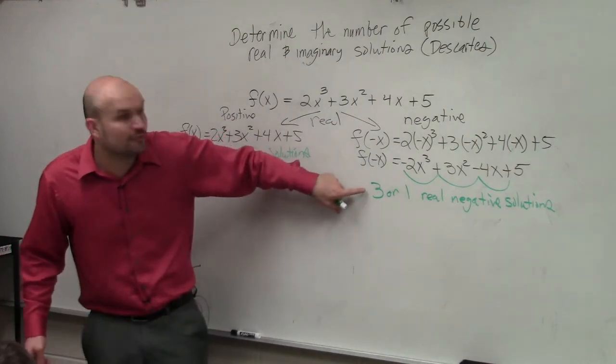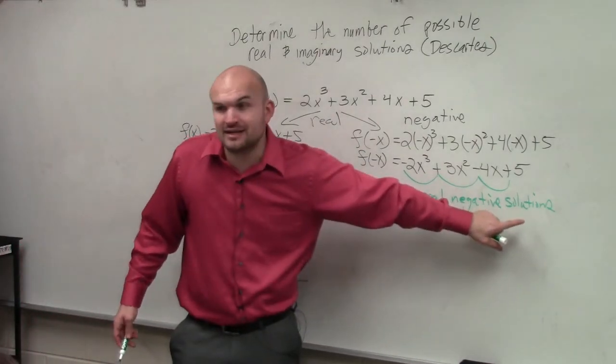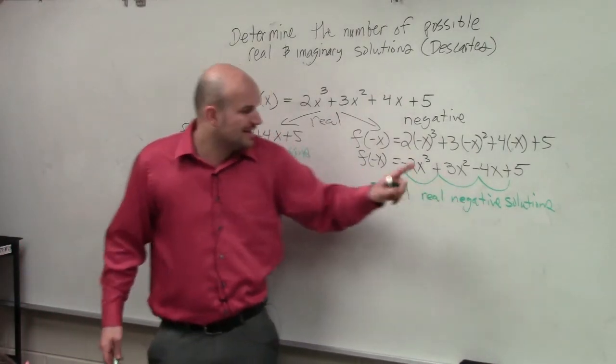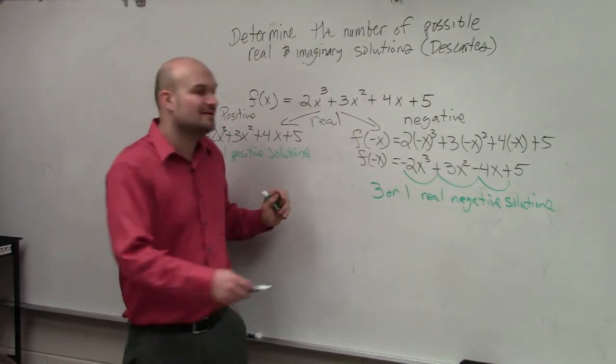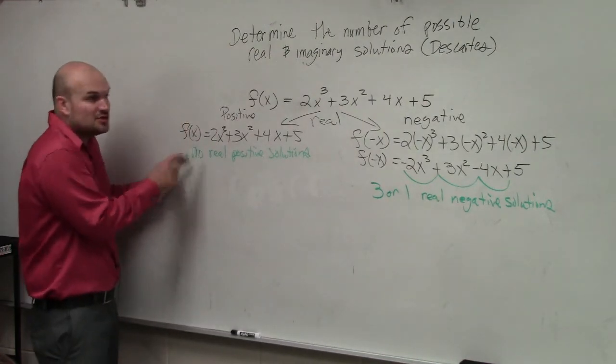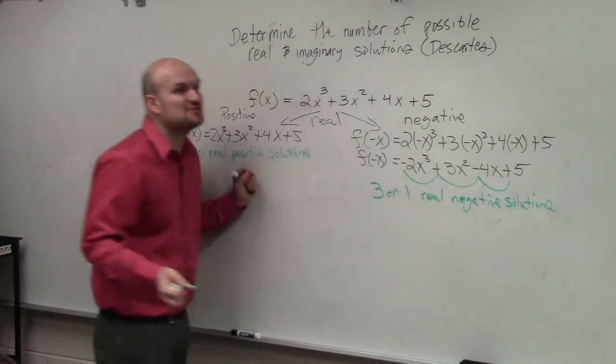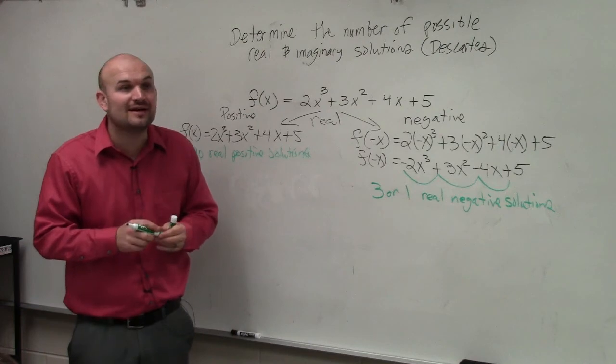So it could be all three of those zeros are real negative numbers. Or if only one of them is a real negative number, what does the other two have to be? Positive. Well, we can't have any positive. So it can't be positive. There's one negative. There's only one more type of solution we can have. Imaginary. Imaginary. So you have three real, or one real and two imaginary.